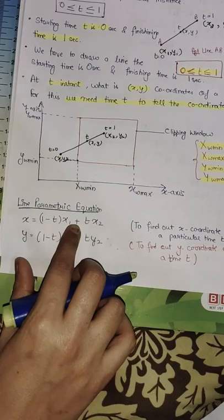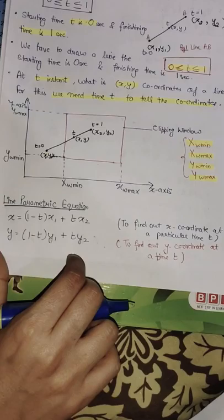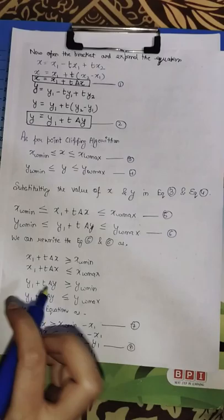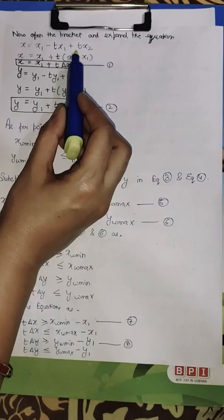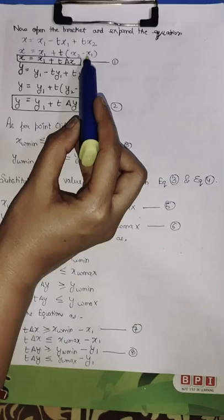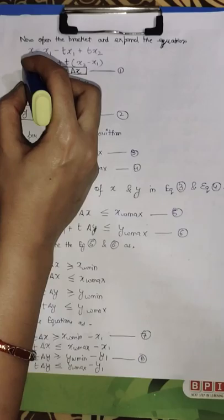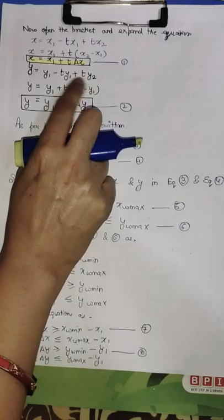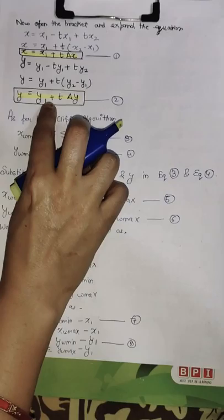The parametric equation of the line is: x = (1 − t)·x1 + t·x2. Expanding this, we get x = x1 + t·Δx, where Δx = x2 − x1. Similarly, y = y1 + t·Δy, where Δy = y2 − y1.